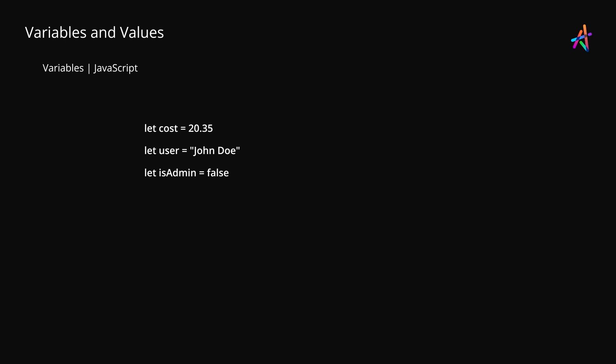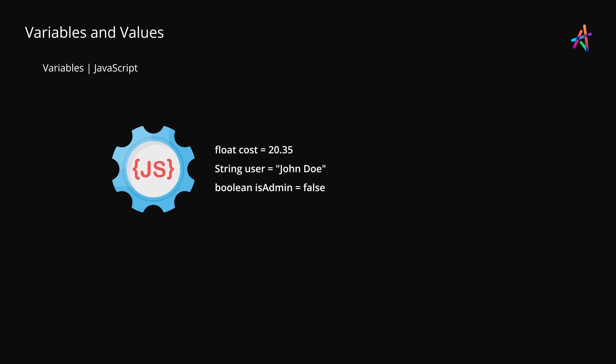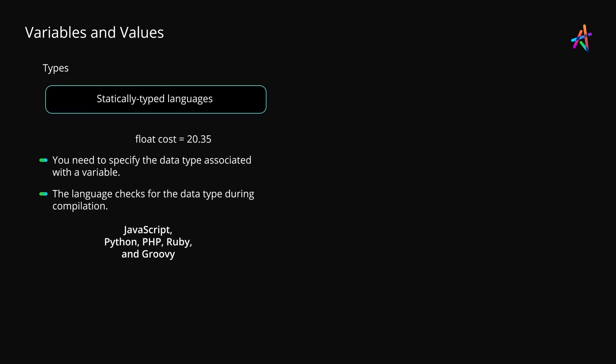You can also use variables to store strings, booleans, and other types of data, so the variable itself has a data type associated with it. Languages like Java require you to specify the type of data you're going to store in a variable — this is like earmarking one basket for fruits while another is strictly for vegetables. In such cases, if you attempt to store something else you'll get an error. Such a language is known as a statically typed language, where the compiler checks if you're storing the right kind of data in variables during the compilation phase.